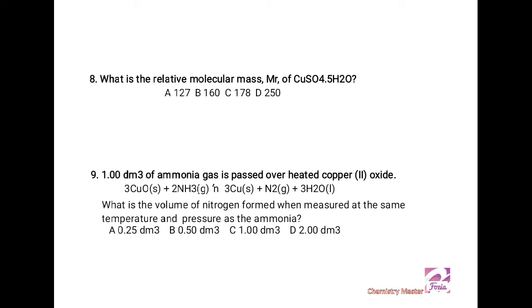The ninth MCQ is: 1.00 decimeter cube of ammonia gas is passed over heated copper oxide. The equation is also there, and from the given equation you have to see what are their molar ratios in comparison. The question is, what is the volume of nitrogen formed when measured at the same temperature and pressure as the ammonia? Here you can see two moles of ammonia are producing one mole of nitrogen gas. If you are given one mole of ammonia, you will get half mole of nitrogen, so the correct answer is 0.50 decimeter cube.